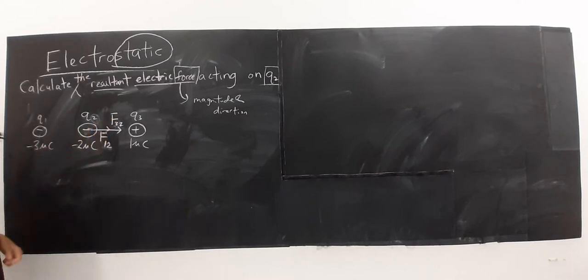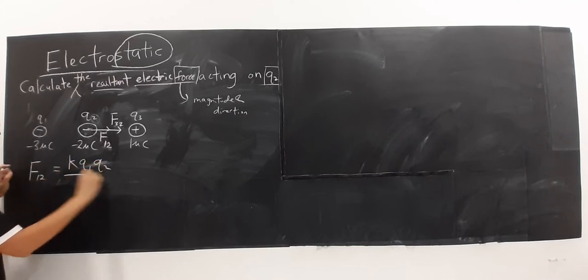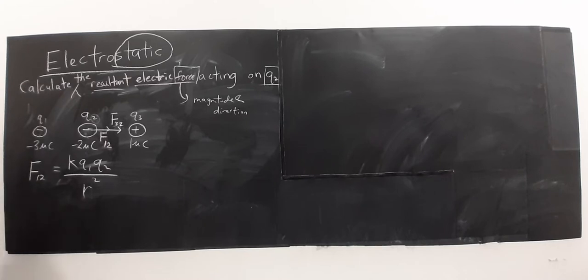Jadi selepas saya menentukan arah dia, what is the next step? We are going to calculate the electric force for F1,2. Jadi apa formula dia? Maka kita akan guna konsep Coulomb's Law. F sama dengan K Q1 Q2 over R².